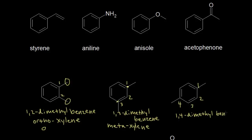Most people would name 1,4-dimethylbenzene as a xylene derivative. When the two groups are opposite each other on the ring, that relationship is called para in organic chemistry. So this molecule is para-xylene, or p-xylene.